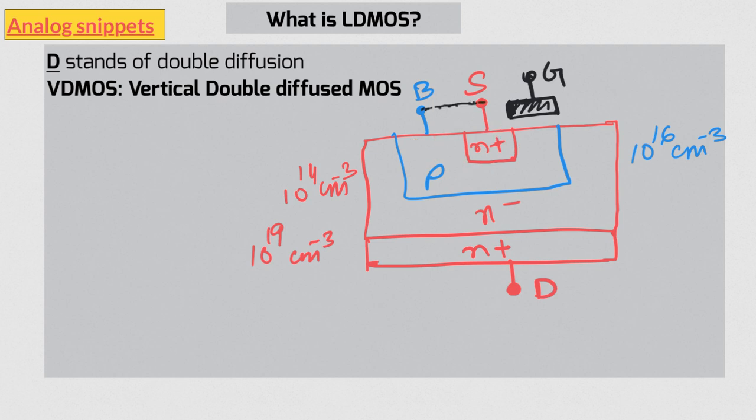So what is the advantage of this vertical structure? The biggest advantage is that this vertical structure uses the silicon real estate much more effectively. Unlike planar devices which are confined to the surface, this device uses the whole silicon. The other advantage is that the whole side of the die is drain, which reduces the Ron.